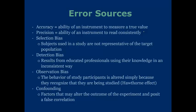Error sources. We're all human, and as such, we're not perfect. So there is a chance that error will bleed into even our best efforts at being objective. The first error source is accuracy — the ability of an instrument to measure a true value, or how close a value is to the actual value. Precision is the ability of an instrument to read consistently. However, take note that you can be precise in the wrong answer, so it takes a little bit of both.